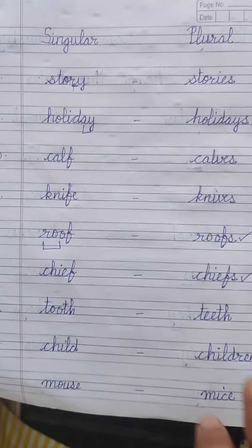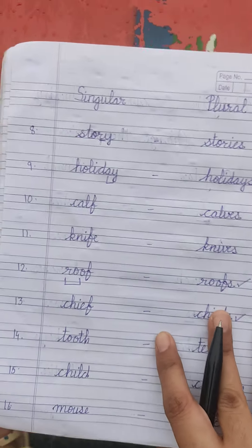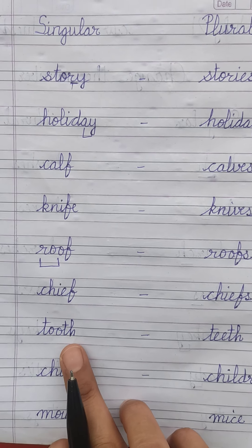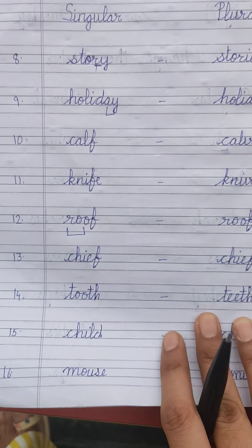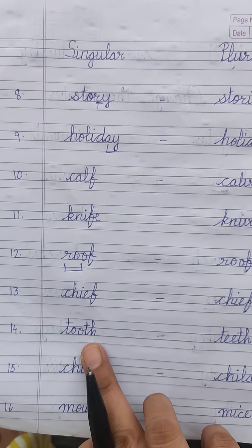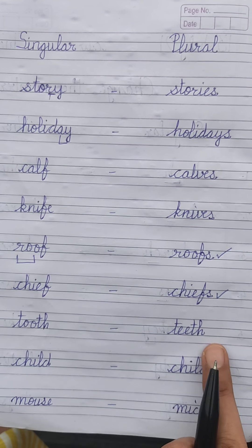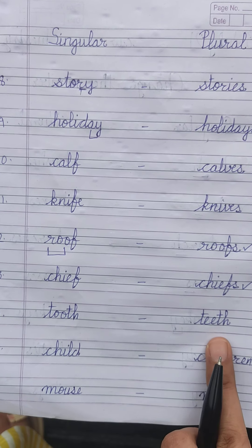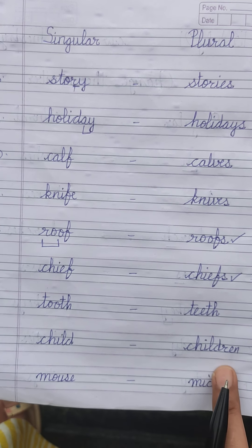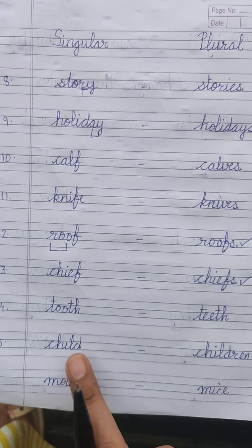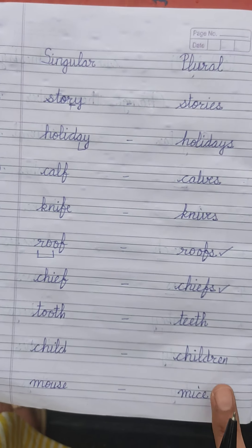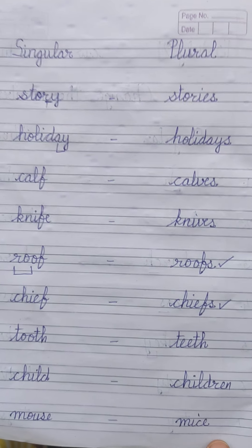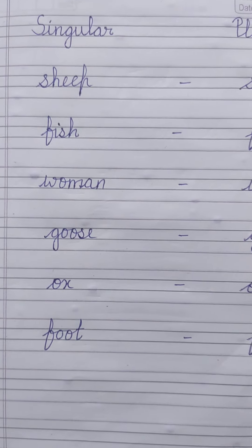Now there are a few more words where different rules apply — no particular rule of adding 's' or 'es.' The word 'tooth': if there is one, it is 'tooth'; more than one, it is 'teeth.' Child → children. Mouse → mice.